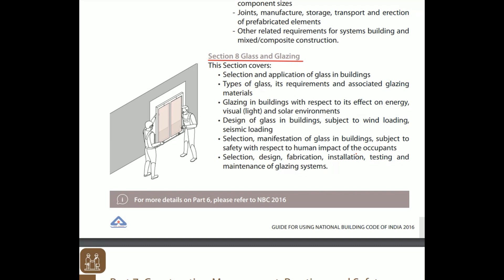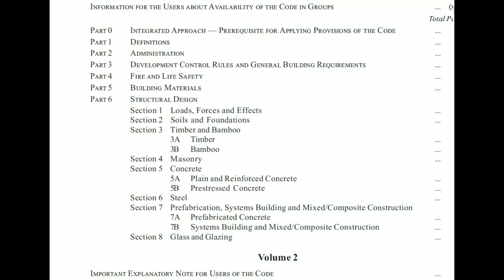Section 8 covers glass and glazing. This covers the selection and application of glass in buildings, types of glass and their requirements, associated glazing materials, glazing effects on energy, visual, and solar environments, design of glass buildings subjected to wind loading and seismic loading, selection and manifestation of glass with respect to safety and human impact, and selection, design, fabrication, installation, testing, and maintenance of glazing systems.